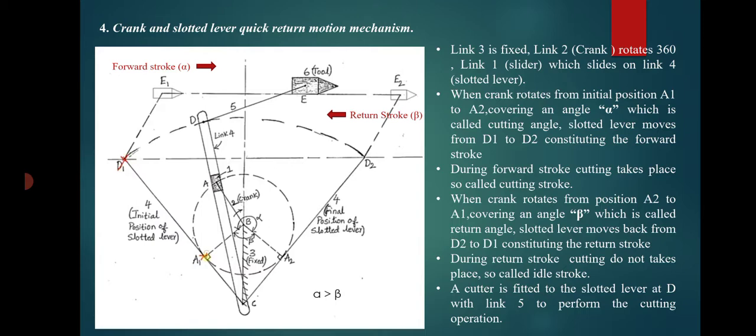Next is the crank and slotted lever quick return motion mechanism. Link 3 is the fixed link. Link 2 is the crank, which rotates 360 degrees. Link 1 is the slider, which slides on link 4, the slotted lever.